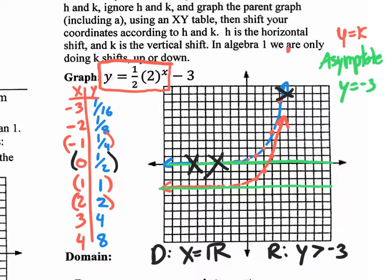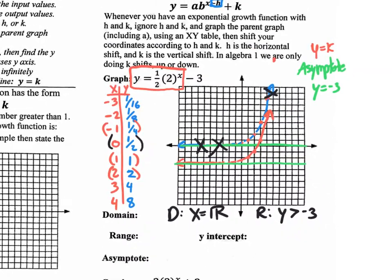This red graph is clearly above the y value of negative 3. It looks like it gets closer and closer, but it never actually touches — it just infinitely approaches. So that's all you need: ignore the k value, focus in on the parent graph, graph it, then move everything either up or down depending on your k value. Once you graph your new graph, you can state your asymptote and domain and range of that new graph.